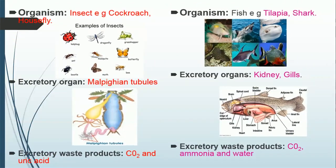Let's look at insects. Examples include cockroaches, house flies, mosquitoes, bees, and so on. They make use of a structure called the Malpighian tubule. Look at the image here — you'll see the part labeled as the Malpighian tubules. The excretory waste products include carbon dioxide and uric acid. Uric acid is a nitrogenous waste in solid form.